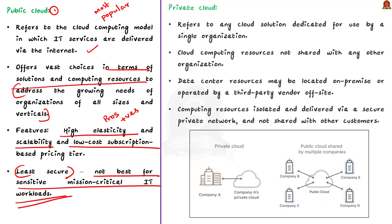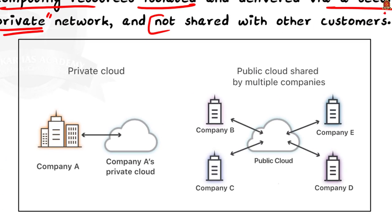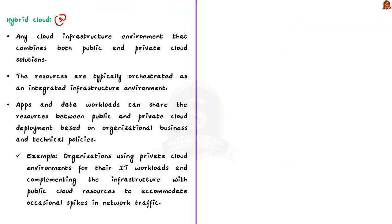Now let us see about private cloud. The private cloud refers to any cloud solution dedicated for use by a single organization. In the private cloud, you are not sharing cloud computing resources with any other organization. The data resource centers may be located on-premise or operated by a third-party vendor off-site. The computing resources are isolated and delivered via a secure private network, which is not shared with other customers.